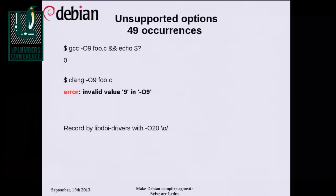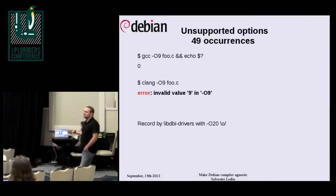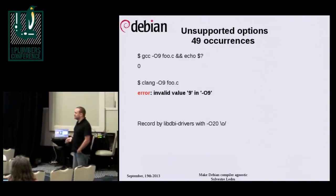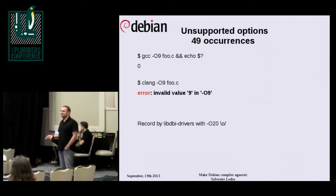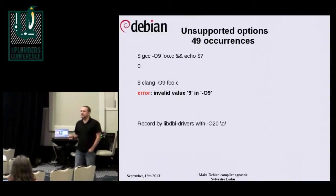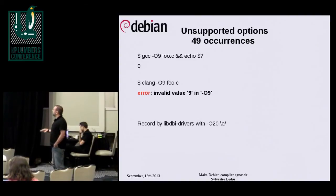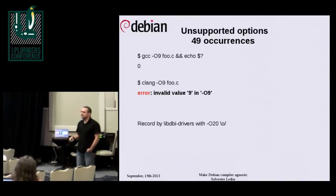Some common errors. My favorite: some folks think that using -O.9 or -O.20 will really improve the performance of their software. We have about 50 packages in the archive doing this. The record is libdbi-driver with -O.20. Clang considers that an error. We should probably change that in Clang to make it a warning, because it's a waste of time failing the build just for that.